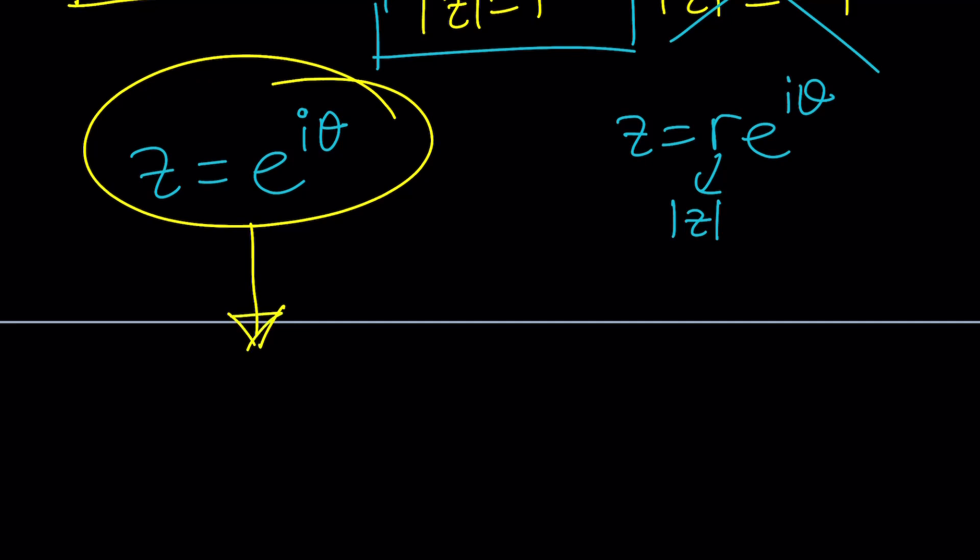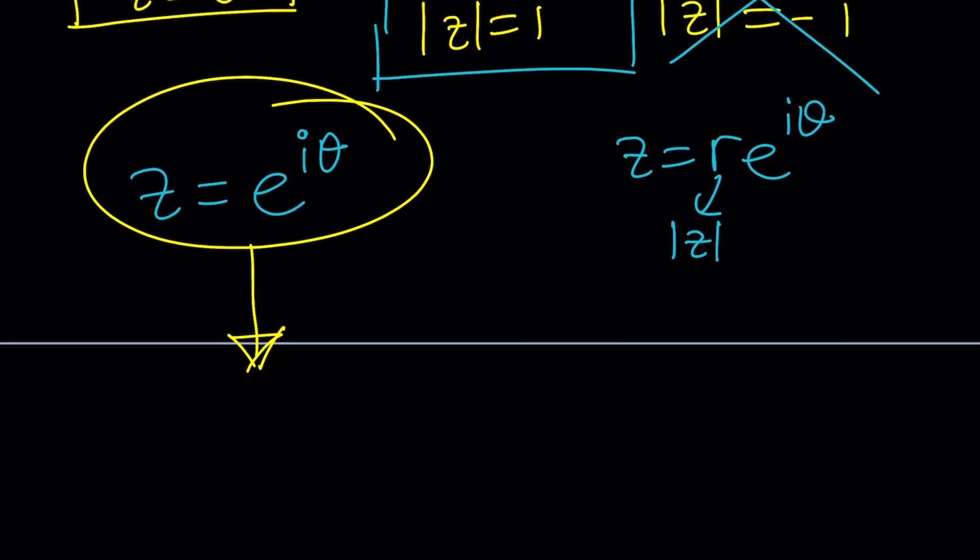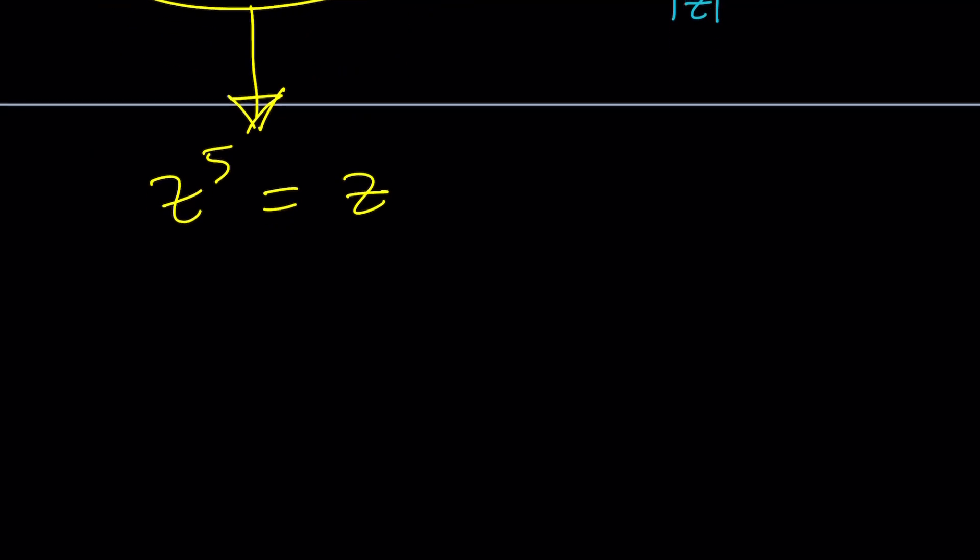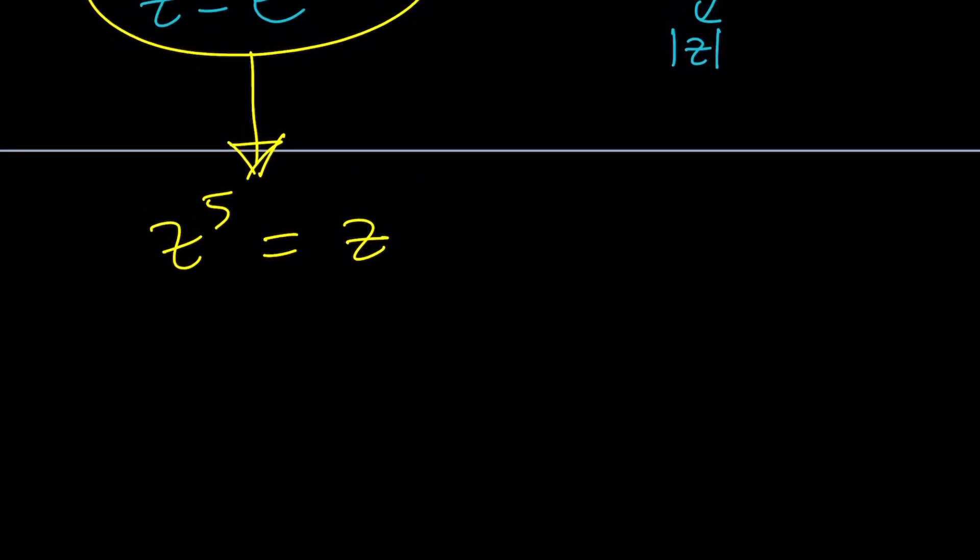And this is super helpful because I can plug it into the original equation. Now, if I knew that the absolute value of z does not equal one, it's two or something else, could I still use the form like this? Yeah, with the r, you can, but this is going to be better. So let's go ahead and plug it into our equation. What do we have? Z to the fifth equals z. So if you replace z with e to the i theta, raise it to the fifth, set it equal to this.